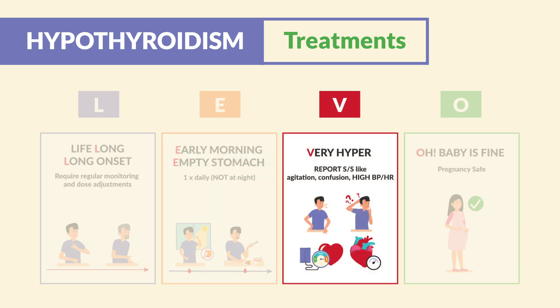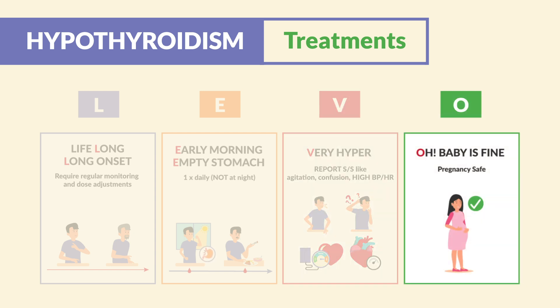V is for very hyper — we have to report signs and symptoms of agitation, confusion, and high blood pressure or even high heart rate, because overcorrection can cause a thyroid storm. And lastly, O in LEVO — oh, the baby is fine, because levothyroxine is pregnancy safe.